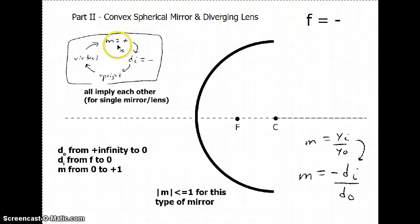You get that the magnification is always positive, the di is always negative. It's an upright image, it's always in the same orientation as the object, it is virtual, there is no light that actually emanates from the image point, it just looks like it does. The object distance as it goes from plus infinity to zero, you will have that the image will move from the focus, the focal length, to zero. The magnification will go from zero to plus one. So the magnification is always less than one or at best equal to it for this type of mirror or this type of lens.